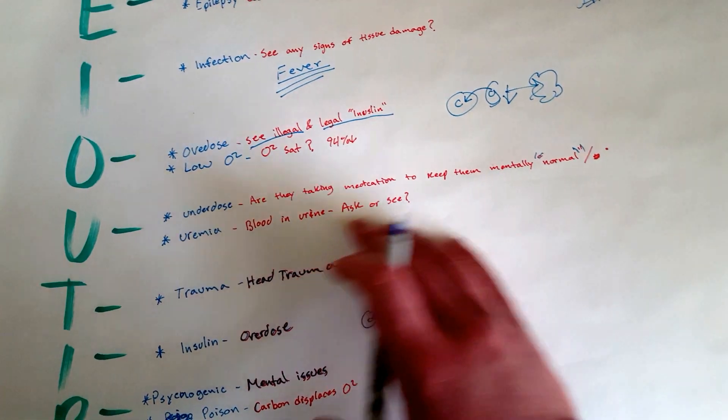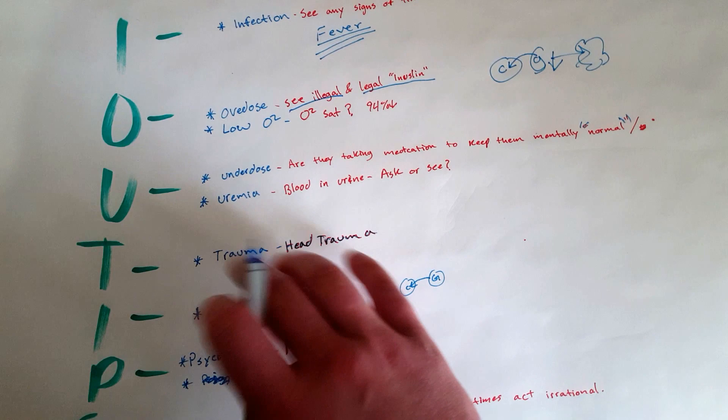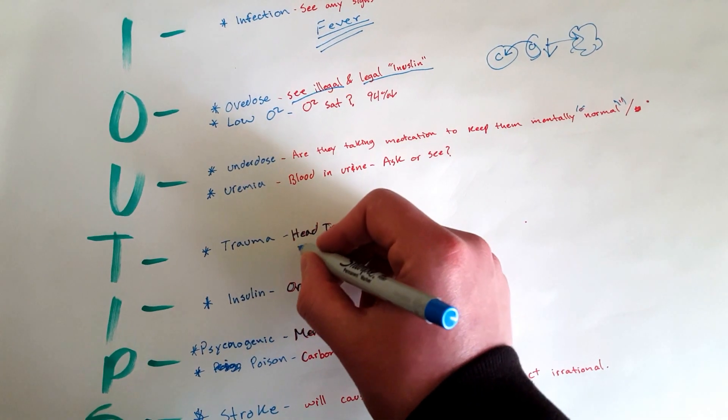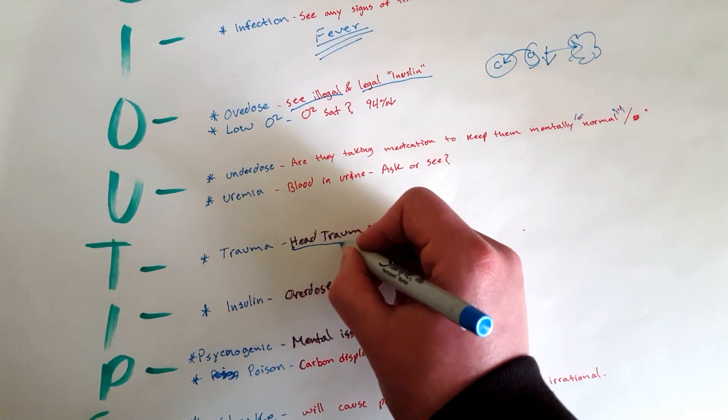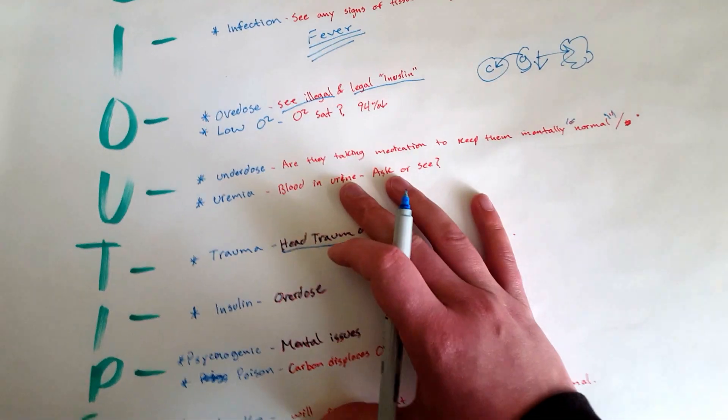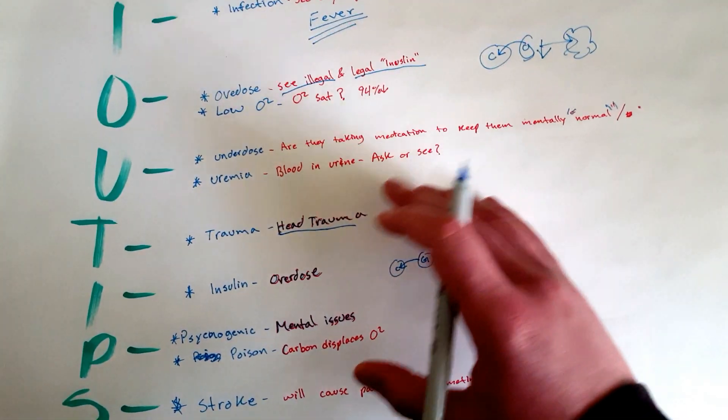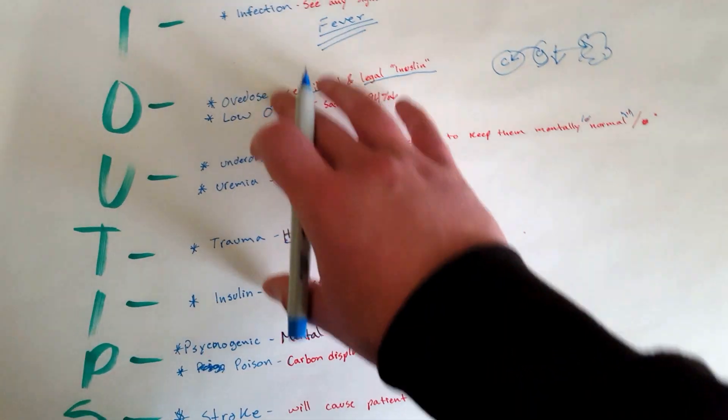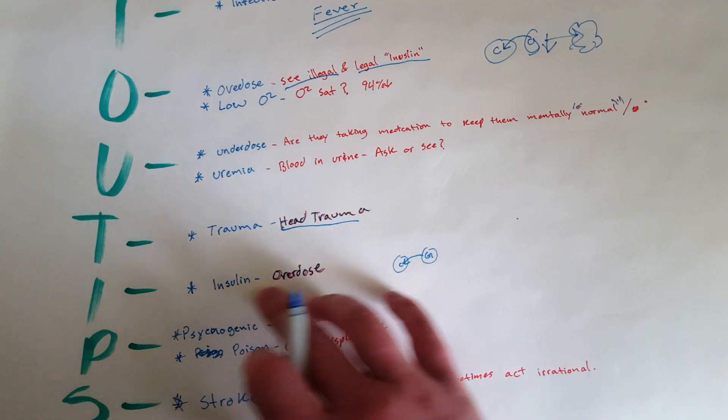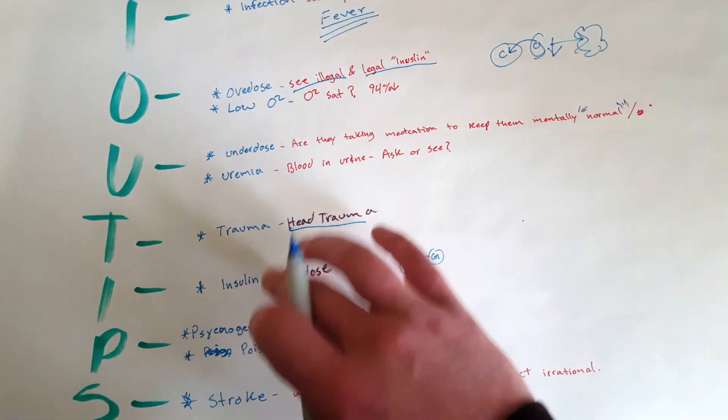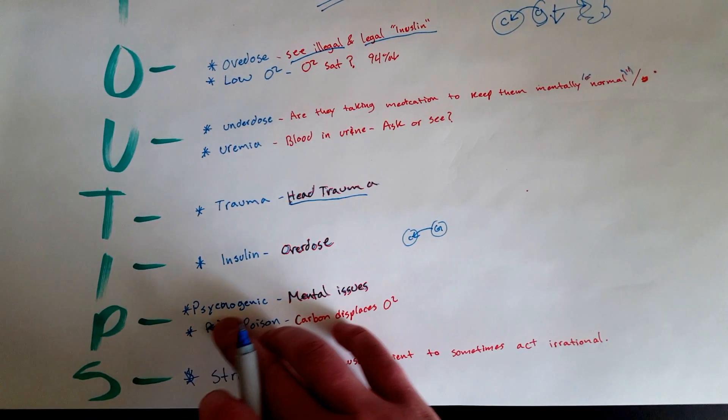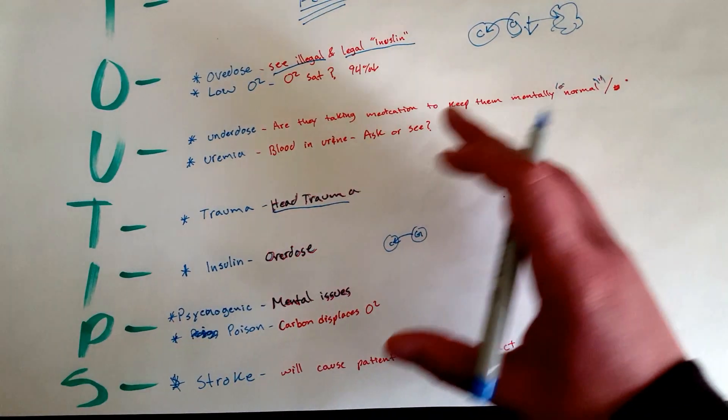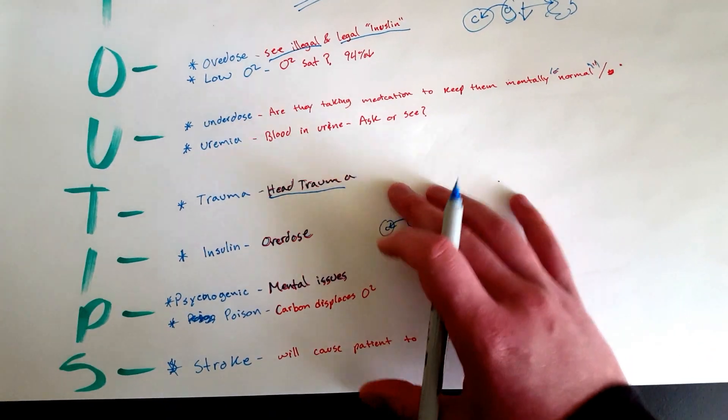T: Head trauma is really big. This one—people will act very irrational after head trauma because their brain just got scattered, right? I: Insulin, and this kind of goes hand in hand with overdose. So insulin: did they take too much insulin? I already covered that so I'm not going to cover it again. P: Psychogenic. Did they have any kind of mental issues, a history of mental issues?